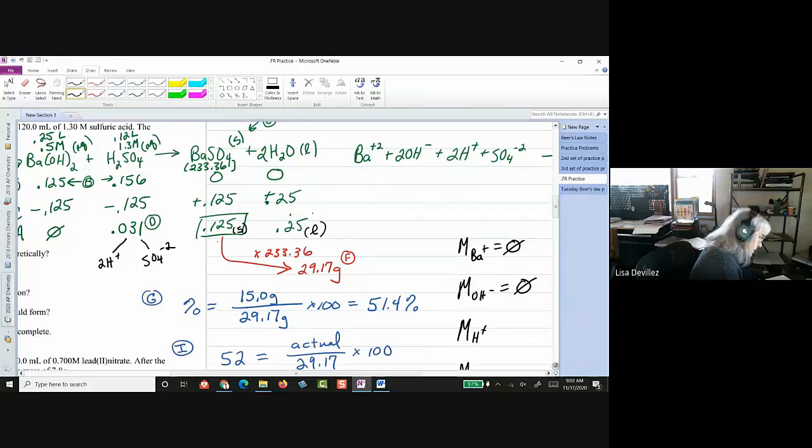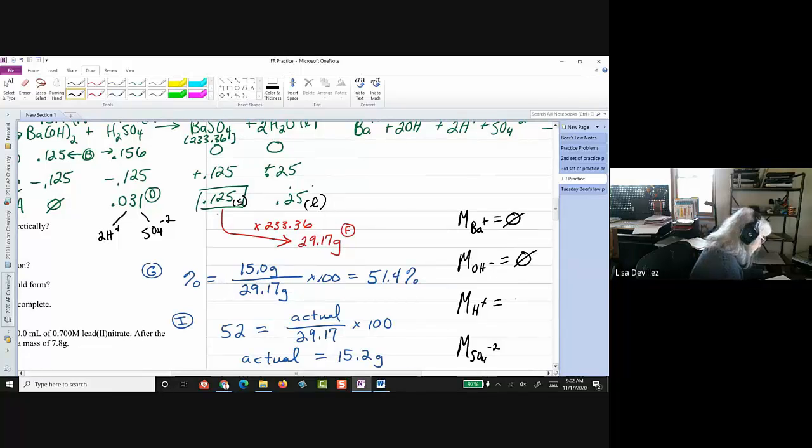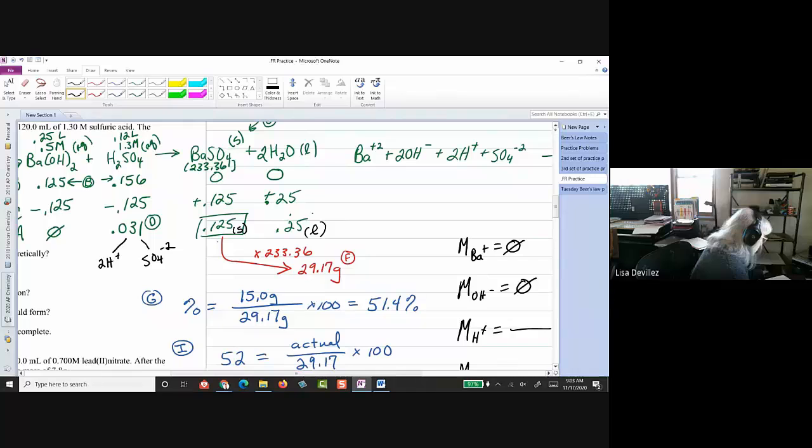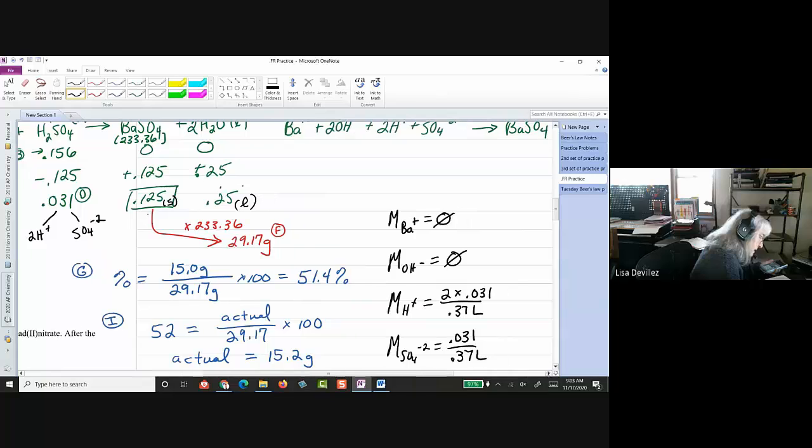So, the ions in solution, then, are going to be my hydrogen. All right, so first let's get, what's our volume going to be? The volume is 0.25 plus 0.12 liters, so 0.37, so 0.37 liters, and 0.37 liters.